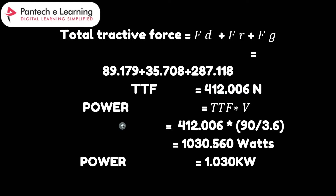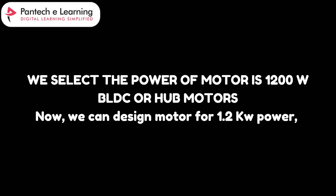Finally, we calculate the power. Power is how fast energy is used or transferred — in this case, how fast the motor can make the vehicle move, and based on this we select our motor. The power comes out to 1.030 kilowatts, that means 1030 watts. So the motor needs to produce 1.03 kW to move the vehicle efficiently. To be safe, I am going to choose a motor with a slightly higher power rating — approximately 1.2 kW, which is 1200 watts — so the motor can handle the workload without struggling or overheating.